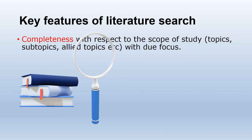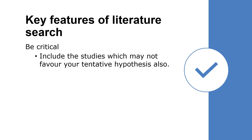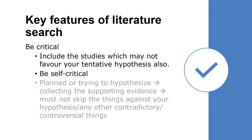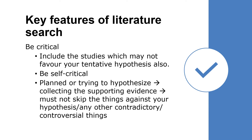The next feature is completeness. Complete the literature search covering all aspects — topics, subtopics, and allied topics with due focus. Be critical: include studies that may not favor your tentative hypothesis. You must not skip contradictory or controversial findings. This creates an unbiased ground for your literature review. And again, always discuss with your supervisor, mentor, and team members for any doubt or help.